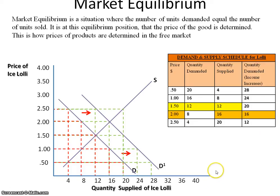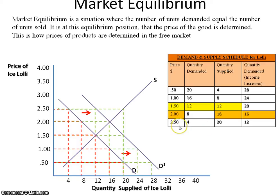With the new demand curve, when the price is $2.50, suppliers are willing to supply 20 units, but demand is now 12 — it was once 4 at $2.50 and has risen to 12. Rationally, suppliers don't want any leftover units; they want everything sold to maximize their profits. At $2.50, they are willing to supply 20 but only 12 are demanded, leaving 8 units of surplus.